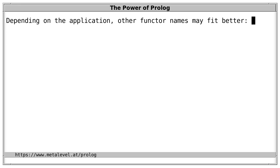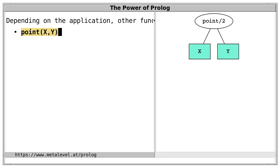Depending on the application, other functor names may also fit better. For instance, in a geometric context, point of x, y could be a very descriptive choice. That's the term with functor point, arity 2, and its two arguments are x and y. Instead of dash, we simply use point here.